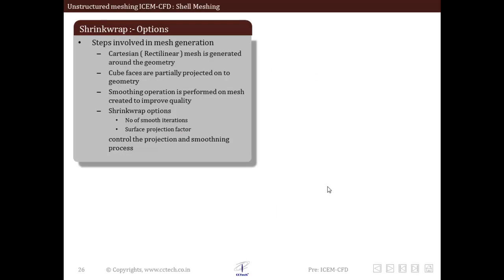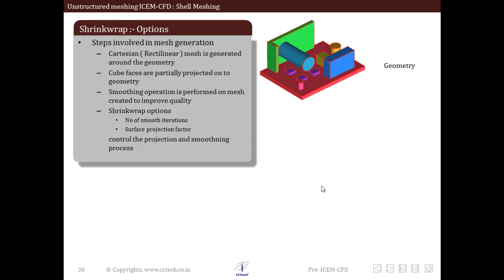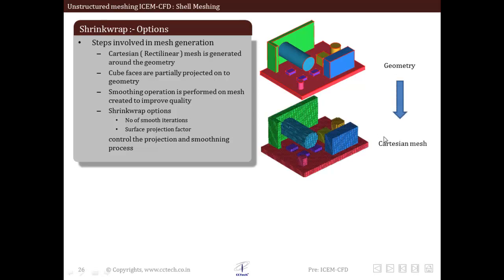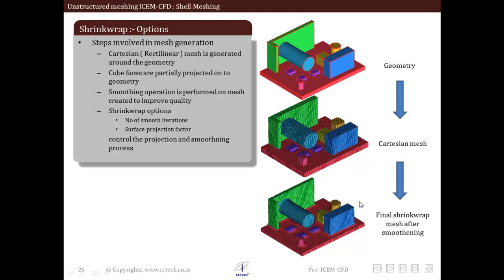Let us see in detail the options available in the shrink wrap mesh. A Cartesian mesh is created around the geometry, then cube faces are partially projected onto the geometry, then the smoothening operation is performed on the mesh that is created. After that, the shrink wrap options — number of smooth iterations and surface projection factor — are activated to control the projection and smoothening of the surface. The first step gives a Cartesian mesh, and the final result is the shrink wrap mesh after smoothening.